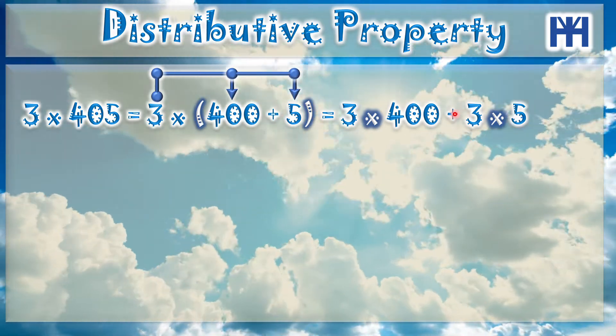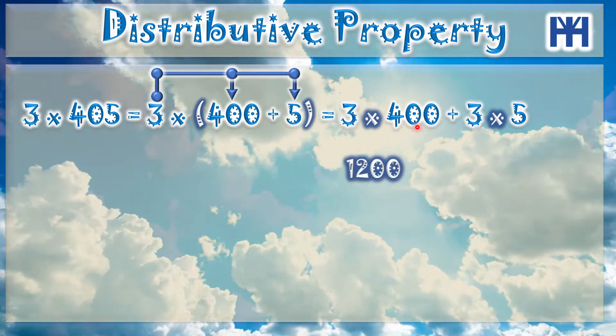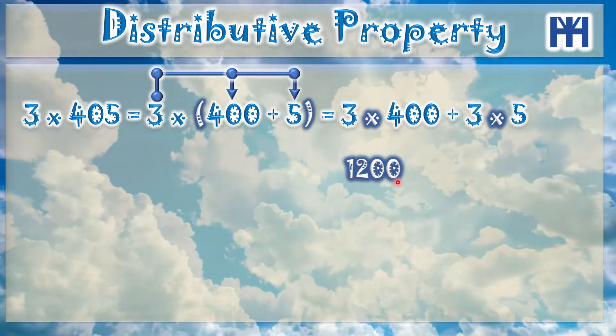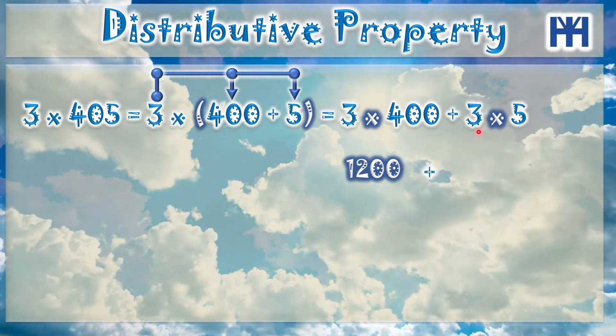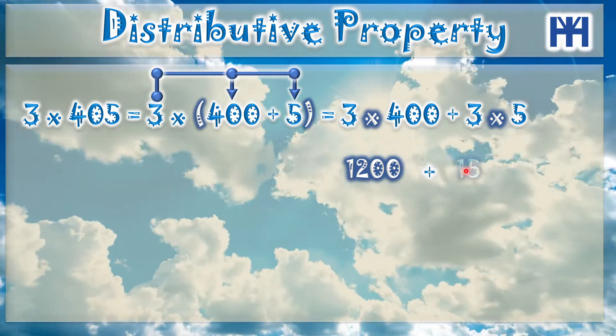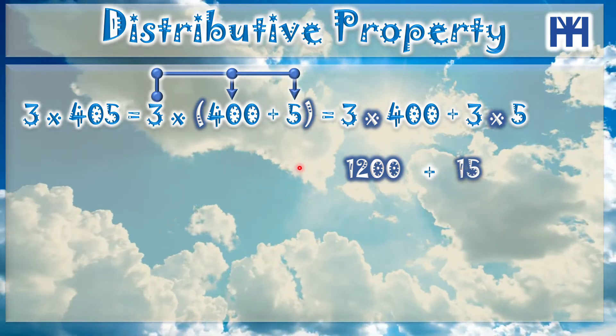So we'll take 3 times 400, it's 1200, plus 3 times 5 which is 15. So this is distributed property.